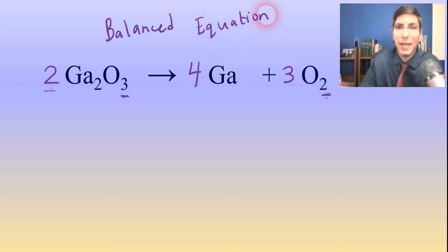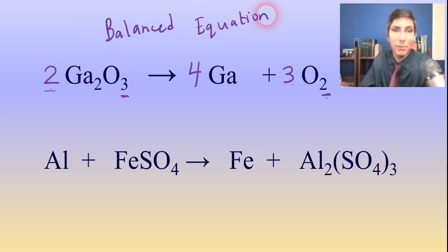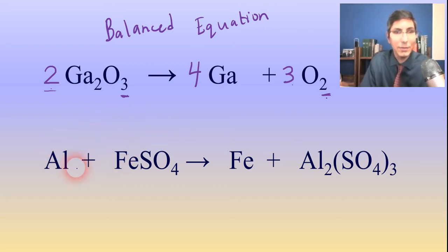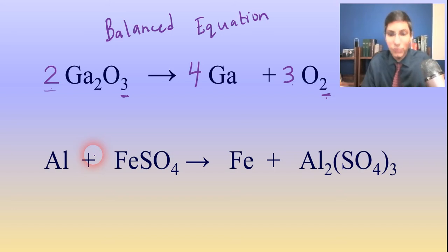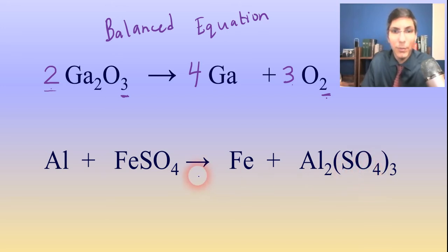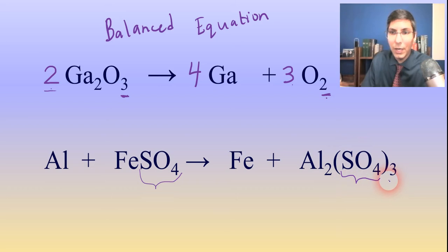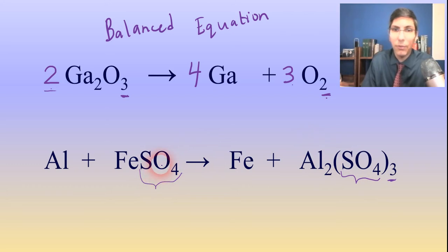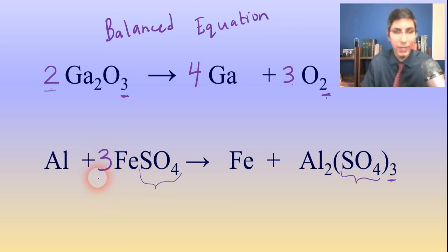We're going to do several examples so you can see how this works in different situations. This next one looks like a single replacement reaction because we're taking an element and adding it to a compound. One thing I like to tell students: if you have a polyatomic ion that remains unchanged — you know, there's an SO4 over here and an SO4 over here — treat that like it's its own unit. We have one SO4 unit on the left but three SO4 units on the right (because of the parentheses and the 3). So I want to multiply the left one by three, putting a 3 as a coefficient out in front. Now I have three sulfate (SO4) units on both sides.